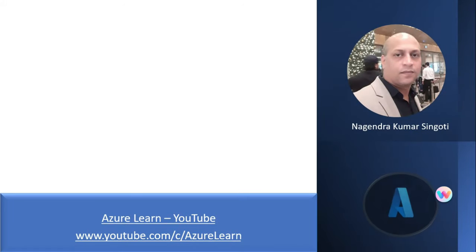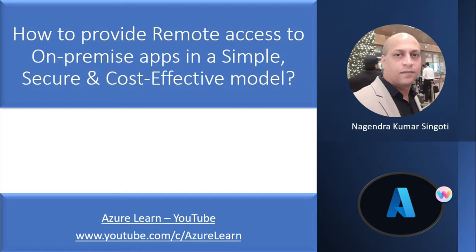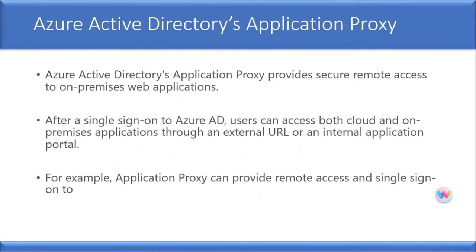Welcome back to my channel Azure Learn. I'm Nagendra Kumar Singhoti and today we are going to discuss how we provide remote access to on-premise applications in a simple, secure and cost-effective way. Azure Active Directory's Application Proxy comes very handy to provide secure remote access to on-premise web applications. After a single sign-on to Azure AD, users can access both cloud and on-premise applications either through an external URL or an internal application portal.